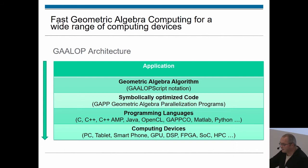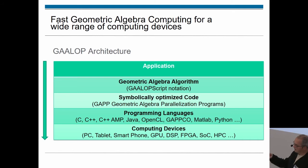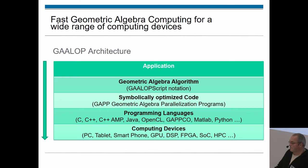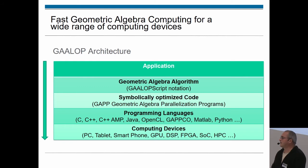Here you can see examples of how to describe the geometric algebra algorithm. We have our own notation called GALOPweb script. We symbolically optimize the code, and the result is a language we call GAP — Geometric Algebra Parallelization Programs. The principal result of GALOPweb is this programming language at a very low level with a lot of parallelism included.